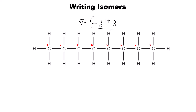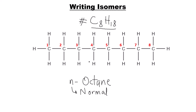The first possible structure to write is what you have on the screen, and the name of this molecule is n-octane. In certain textbooks they only write 'octane' without the 'n', but when writing isomers it's ideal to include the 'n' to mean 'normal octane' — that's what the 'n' stands for. This is the regular or normal octane: a straight chain with no side chain anywhere.